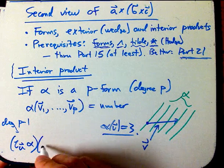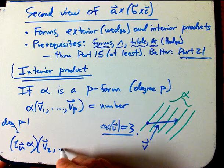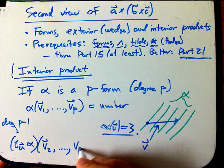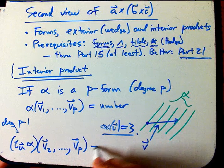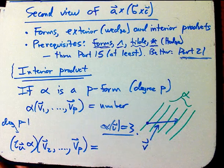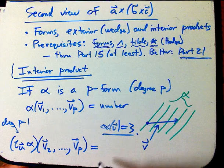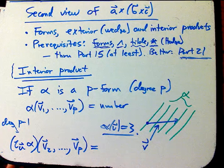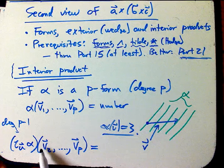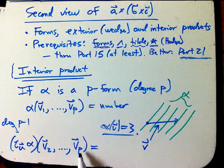So that should be something that eats p minus one vectors, which I'm going to suggestively label as two through p. It doesn't really matter how you label them. And how on earth would I do this? Alpha is something that needs to be fed p different vectors, but I'm only feeding this guy p minus one vectors.